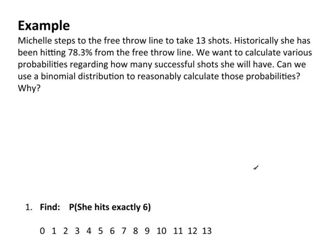Let's take a look at some examples using a basketball scenario. Suppose that Michelle steps up to the free throw line to take 13 shots. Historically, she has been hitting 78.3% from the free throw line. We want to calculate various probabilities regarding how many successful shots she will have.